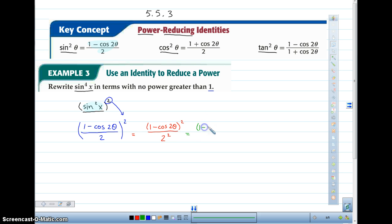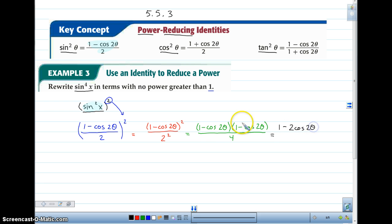So this becomes 1 minus cosine 2 theta squared, and the denominator becomes 2 squared. So when we simplify, I have to do 1 minus cosine 2 theta times 1 minus cosine 2 theta all divided by 4. So I'll go ahead and FOIL this now. 1 times 1 is 1, 1 times negative cosine 2 theta is a negative cosine 2 theta. I'm going to have two of those, my outer and inner are the same, so I have minus 2 cosine 2 thetas. And then when I multiply the last, negative cosine 2 theta times negative cosine 2 theta is a positive cosine squared 2 theta, all divided by 4.